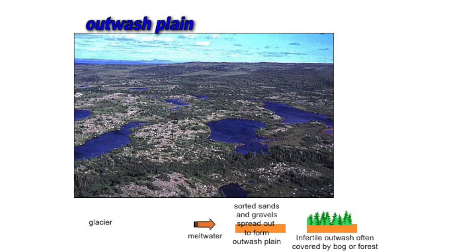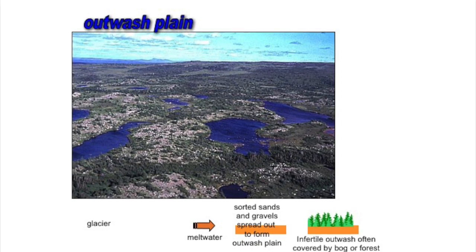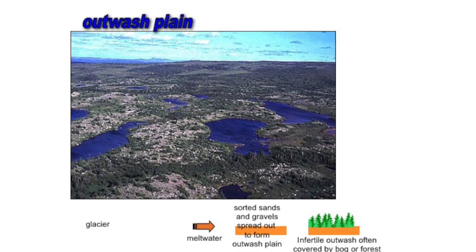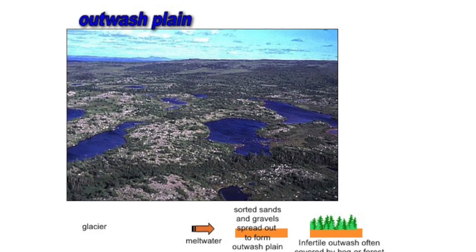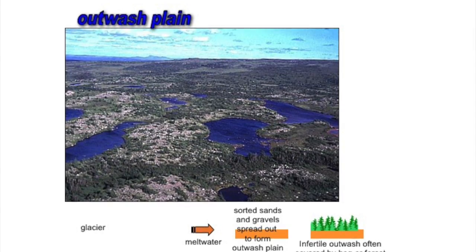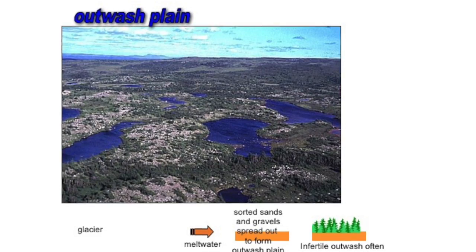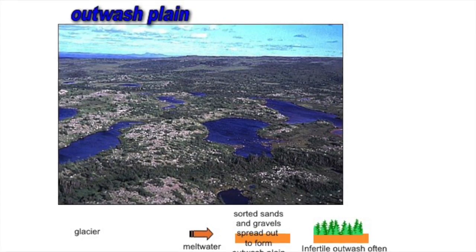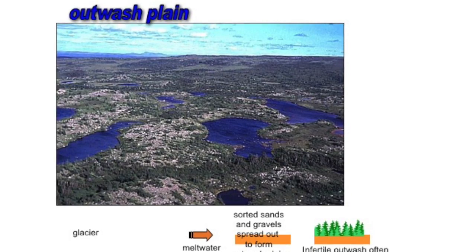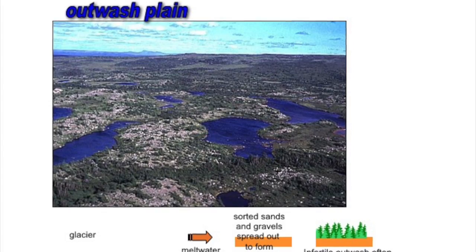Outwash plains are large areas of glacial deposit laid down by meltwater streams that come out of the glacier. At the end of the glacier they form from gravel, sand, and clays — clays being deposited furthest away from the glacier as they are the smallest and lightest particles.